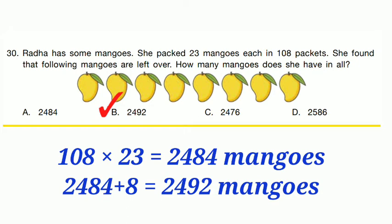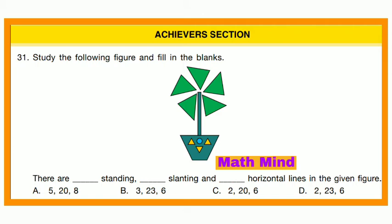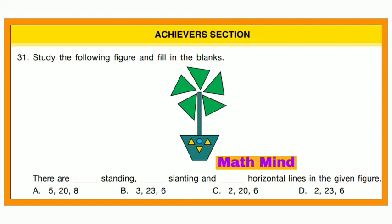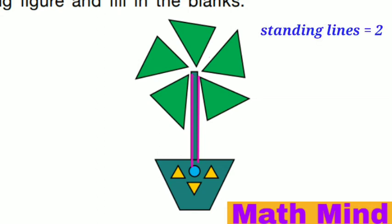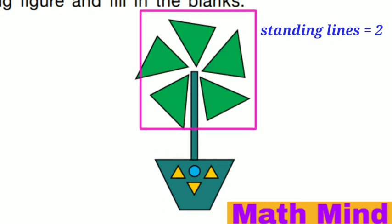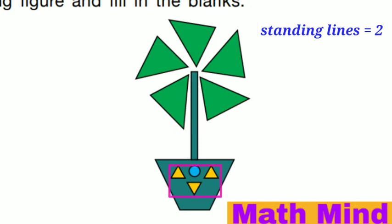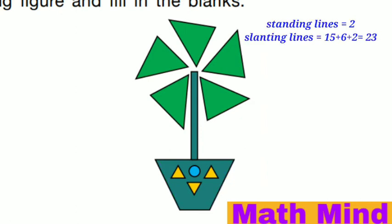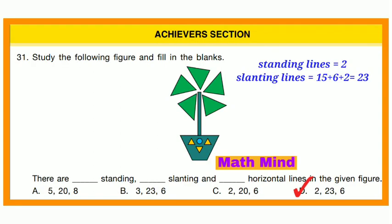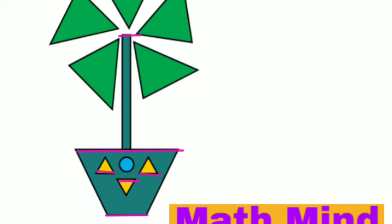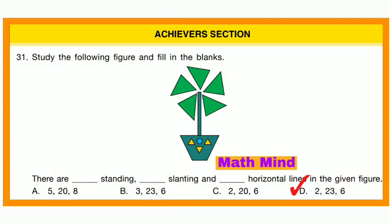Achievers Section, Question No. 31: Study the given figure. How many standing, slanting, and horizontal lines are there? There are 2 standing lines. For slanting lines: 5 triangles × 3 = 15, plus 3 triangles × 2 = 6, plus 2 more = 23 slanting lines total. There are 6 horizontal lines. Option D is correct.